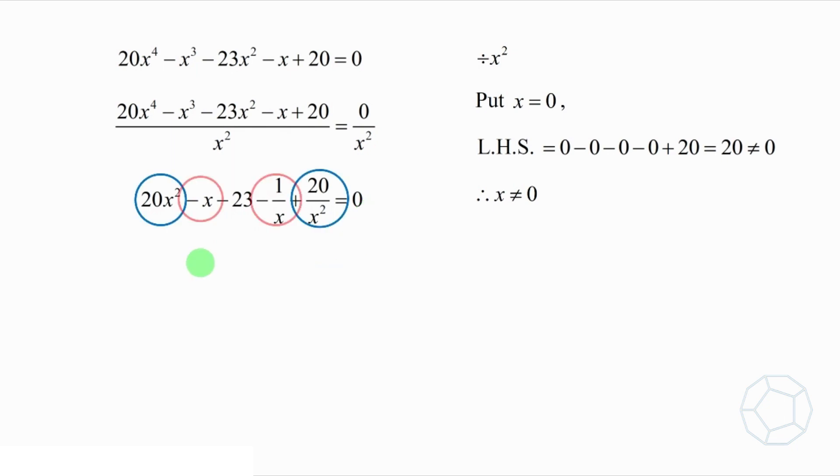As the coefficients of the polynomial are symmetrical, therefore, we group the terms in the front and at the back together. That is 20 times bracket x² plus 1 over x² minus bracket x plus 1 over x minus 23 is equal to 0. This is a very common technique in many tricky questions.